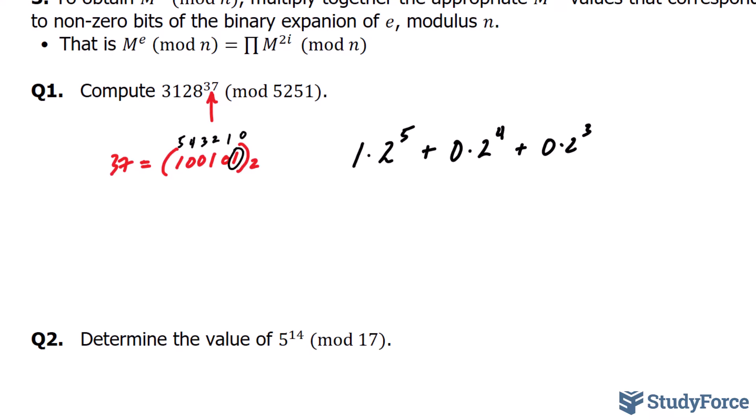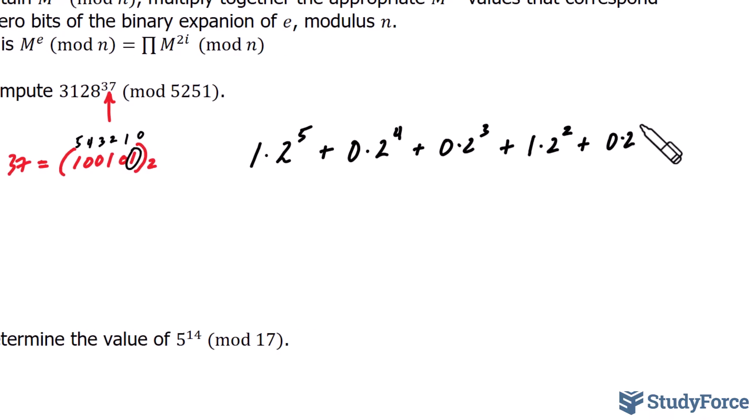So let's continue: plus 1 times 2^2 plus 0 times 2^1 and finally plus 1 times 2^0. The zero terms cancel out. 1 times 2^5 is 32 plus 1 times 2^2 is 4 plus 1 times 2^0 is 1. Altogether, this amounts to 37. Now that we've completed step number 1, in step number 2...